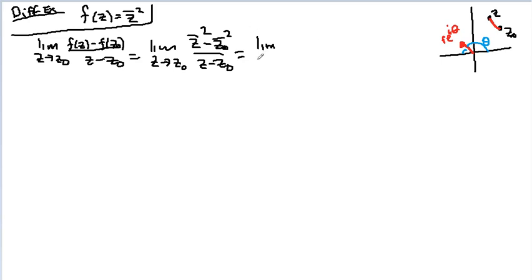So I can make this r goes to zero of z naught plus r e to the i theta squared conjugate minus z naught conjugate squared, all over z minus z naught.